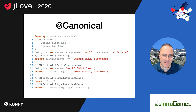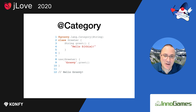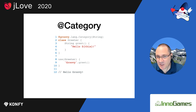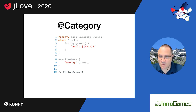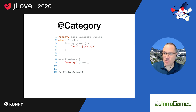Remember our Greeter category from a few slides ago? Here's another way to write categories using the @Category AST transformation. The difference from the previous category is that the method is no longer static, and the receiver is the value of the annotation, but the behavior remains exactly the same — we still have to use the category within a scope. Now you have choices for how to write a category.